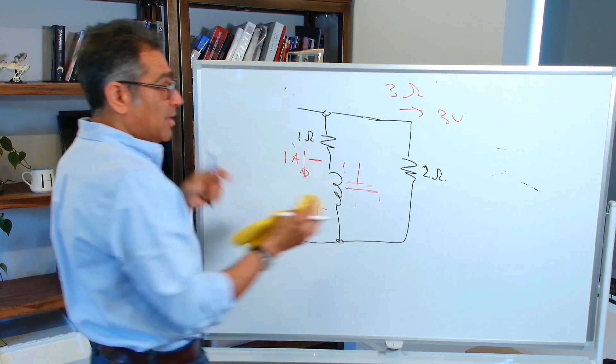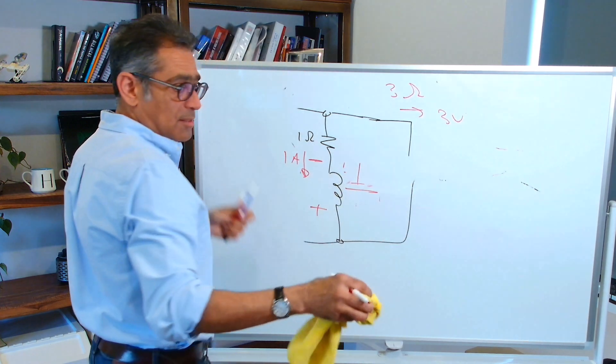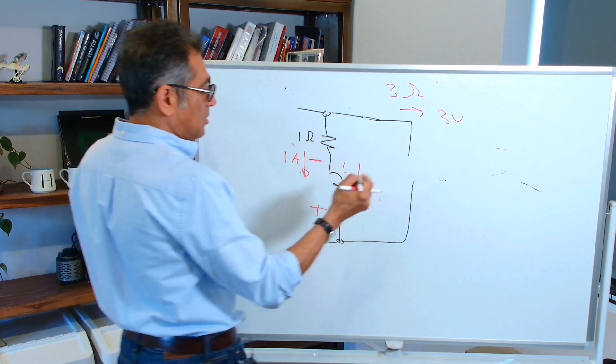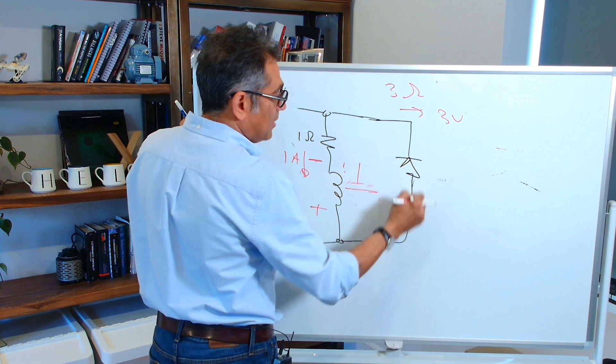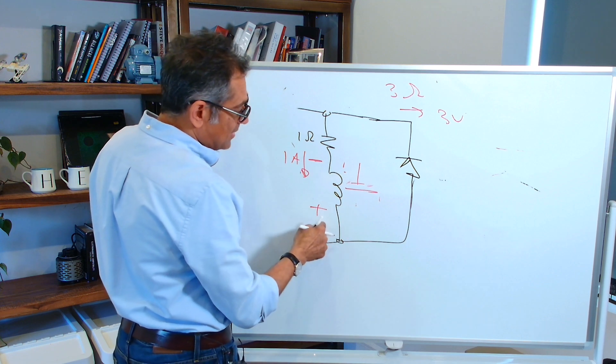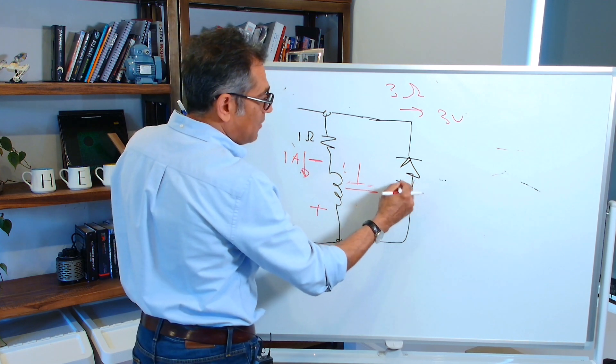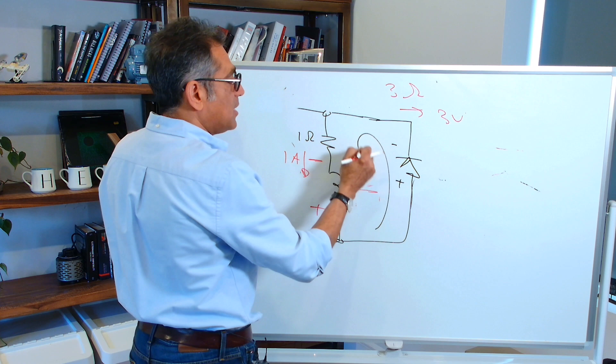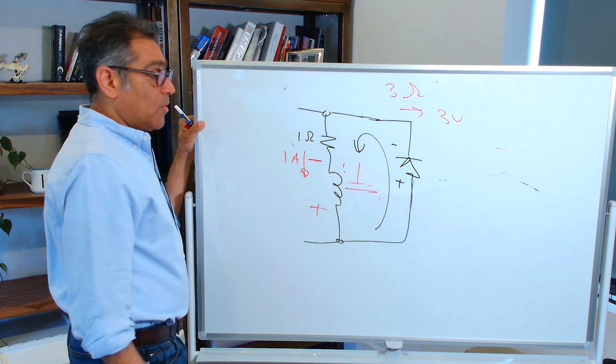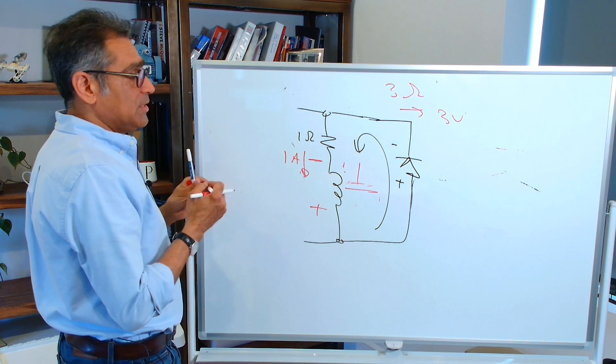And if you were to replace this with a diode that looked like that, suddenly you'll find that this end is more positive than that end. Therefore, it conducts and it starts flowing. And that happens in power supplies all the time.